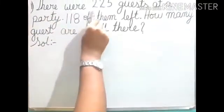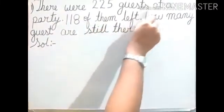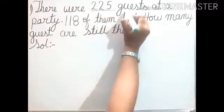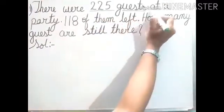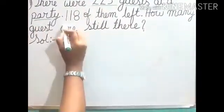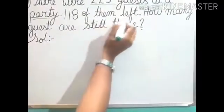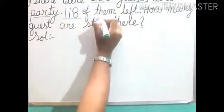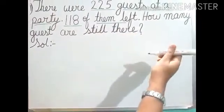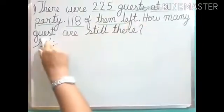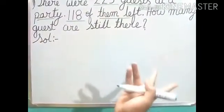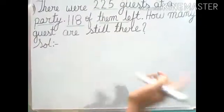There were 225 guests at a party — that means 225 guests are present. Second, what is given? 118 of them left. Now what we have to find out? How many guests are still there? So what we will do here? We will do the subtraction.